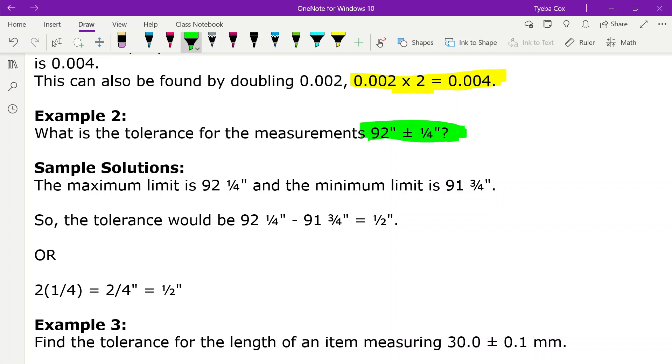So we're looking for the tolerance measurements of 92 inches plus or minus a quarter of an inch. So our maximum is going to be 92 and a quarter of an inch. And the minimum is going to be 91 and three quarters of an inch.